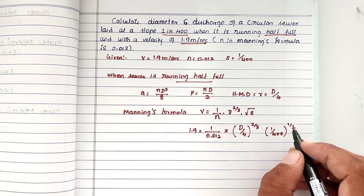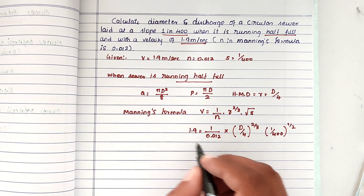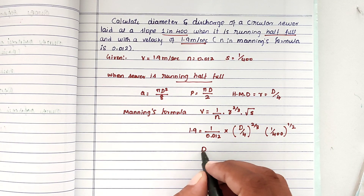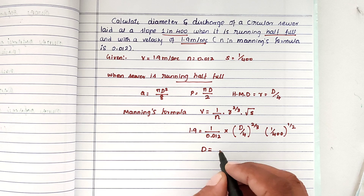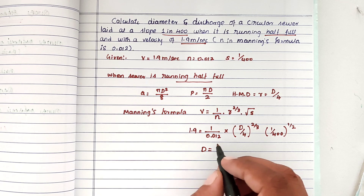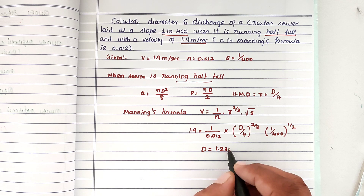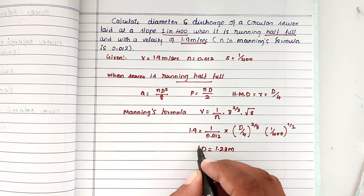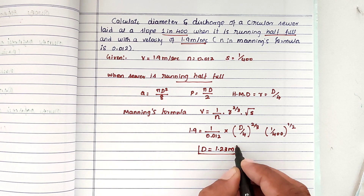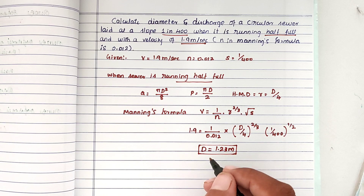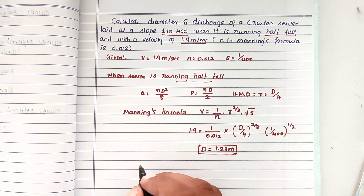Solving the equation, we get the diameter d = 1.23 meters. This is the diameter of the sewer.